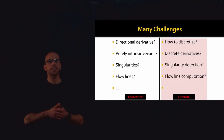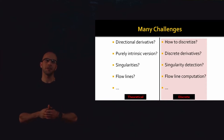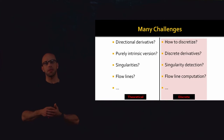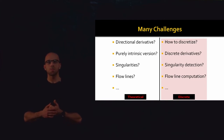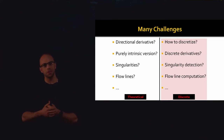In our previous lecture, we gave a whirlwind introduction to the theory of vector fields on manifolds. We talked about how to differentiate vector fields, motivated both a Lie derivative and a covariant derivative, defined vector fields on surfaces, and suggested a few applications. Today, we're going to move to the right-hand side and talk about how to discretize vector fields and their derivatives on surfaces.